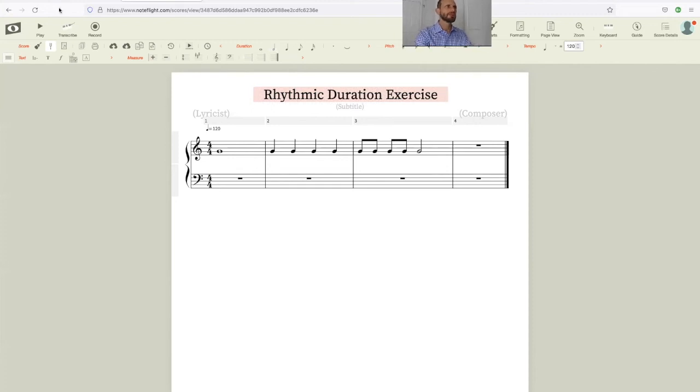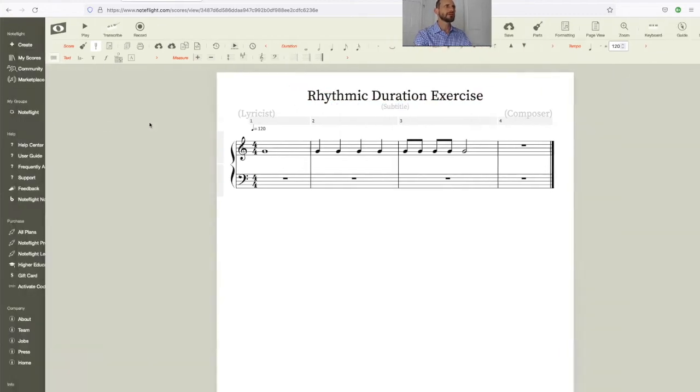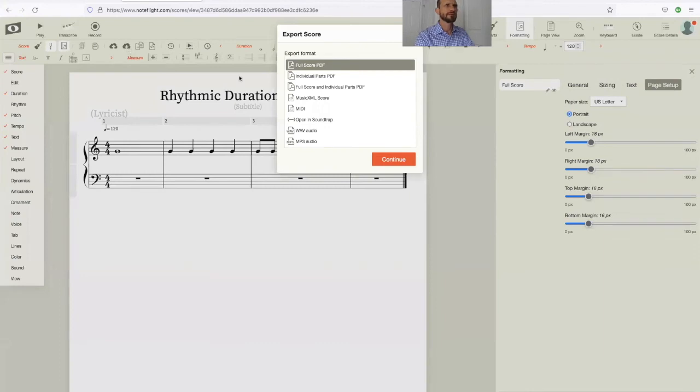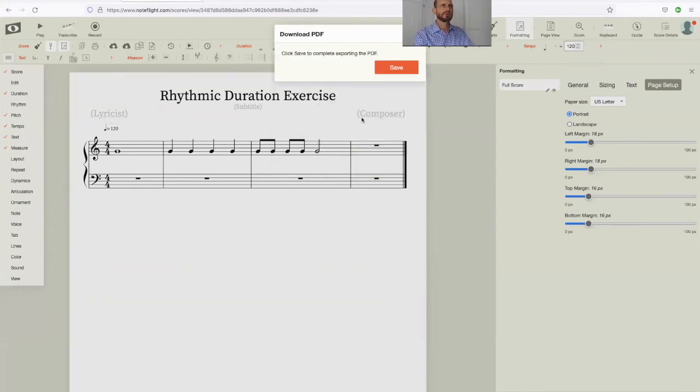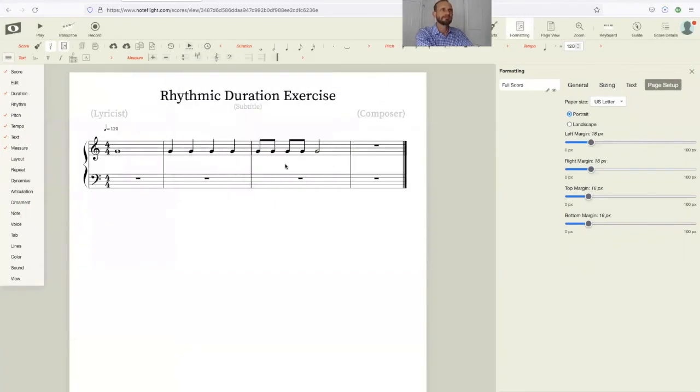That would be your rhythmic duration exercise. When you're done, you would go to export, full score, continue. And then you will submit that. I would put your name on there as the composer so I know who it is. You could just put me, teacher, JP, and then you could export it. Make sense?